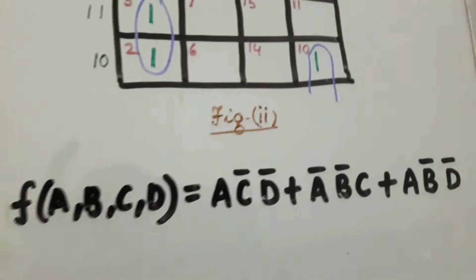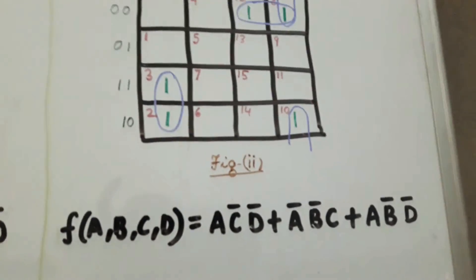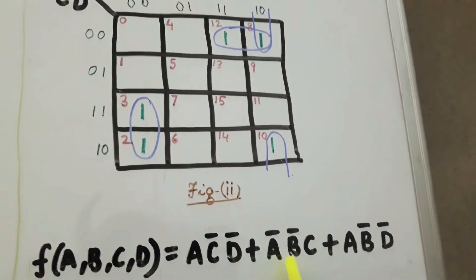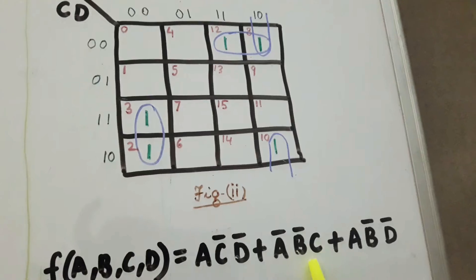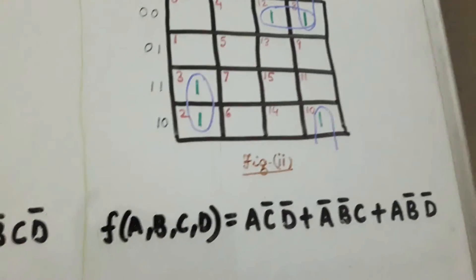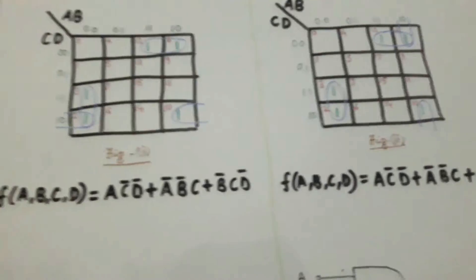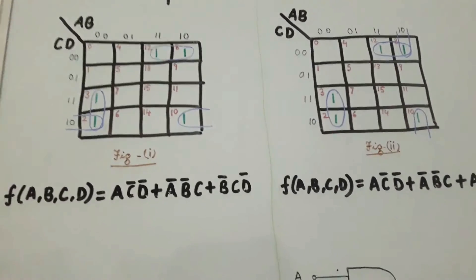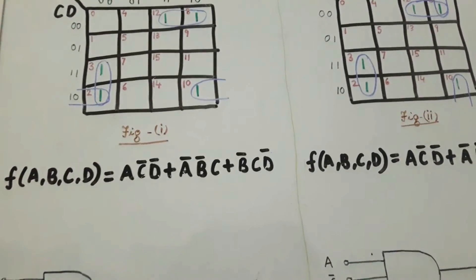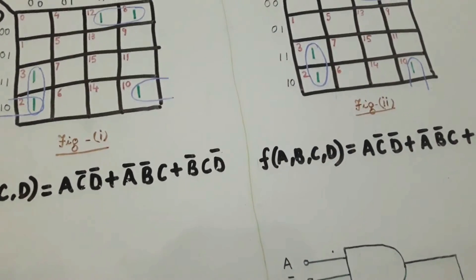Similarly, if we take the K-map as shown in figure 2, we will get the expression F(A,B,C,D) equals AC̅D̅ plus A̅B̅C plus AB̅D̅. Both are correct because in both of the figures we find that the sum of products form involves three terms, each term involving three variables.